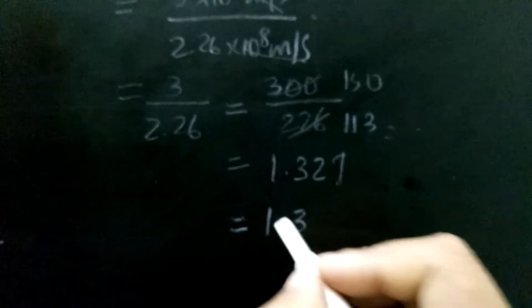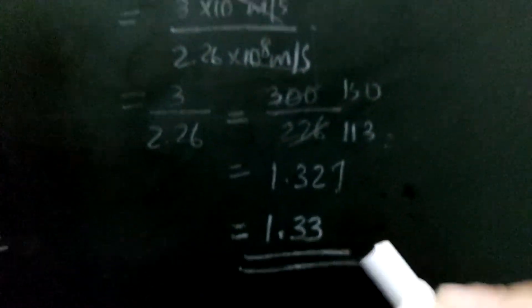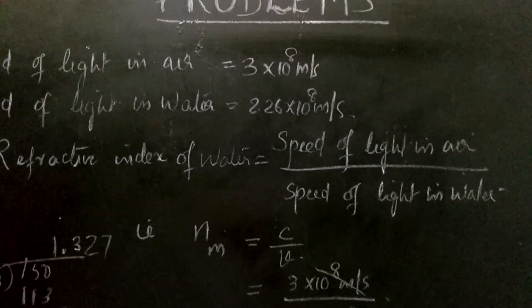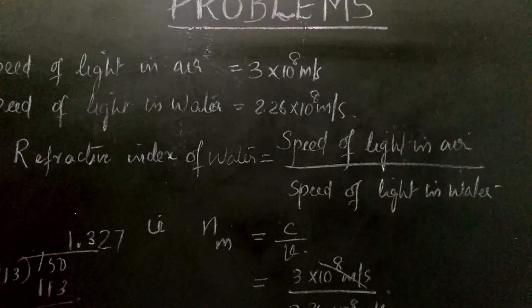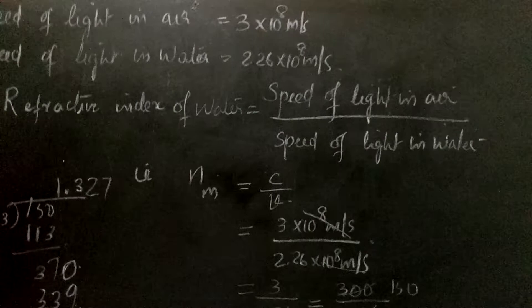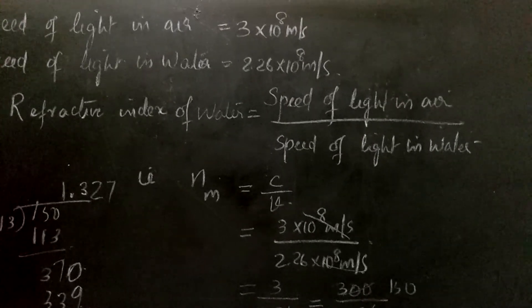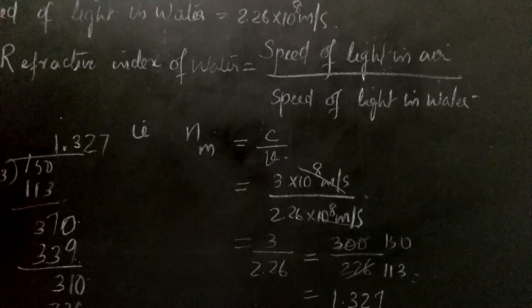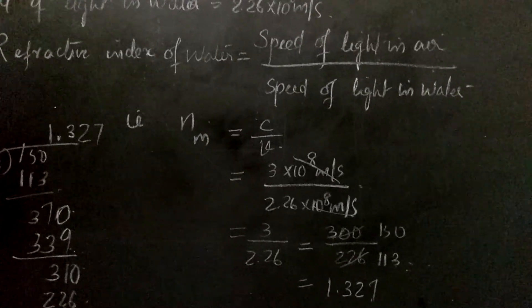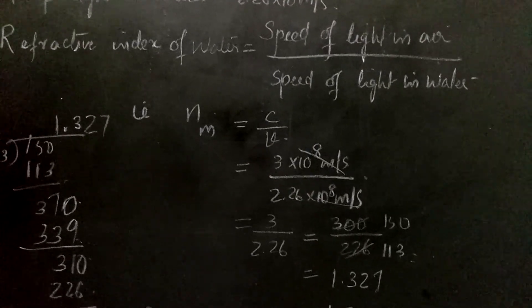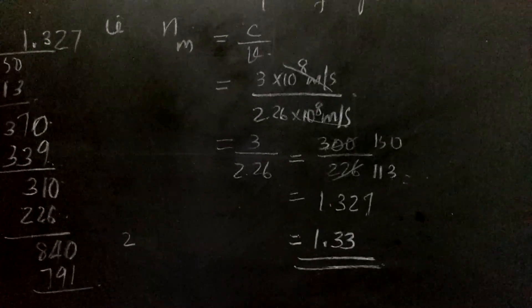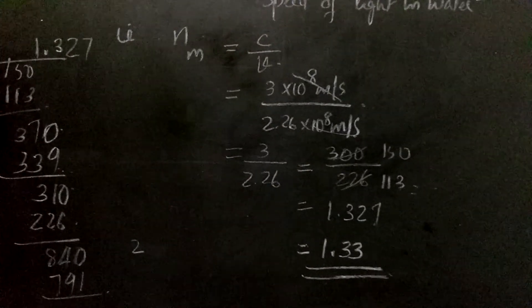So the answer is 1.33. The refractive index of water is 1.33. The equation is: refractive index of water (Nw) equals speed of light in air (C) divided by speed of light in water (V), that is 3 × 10⁸ m/s divided by 2.26 × 10⁸ m/s, giving a final answer of 1.33. Copy it in your notebook.